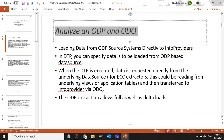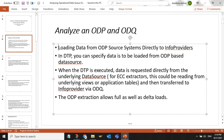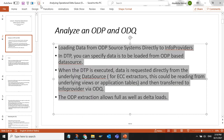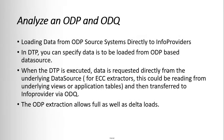Analyze an ODP and ODQ. Loading data from ODP source systems directly to info providers in DTP — you can specify that data is to be loaded from an ODP-based data source. When the DTP is executed, data is requested directly from the underlying data source. For ECC extractors, this could be reading from underlying views or application tables, and then transferred to the info provider via ODQ.